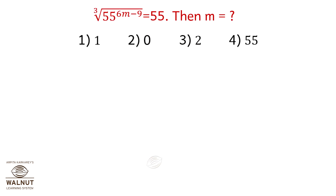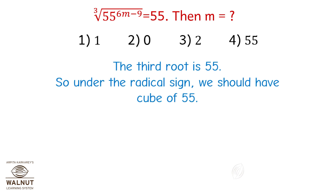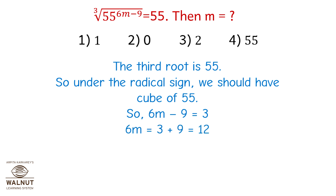Cube root of 55 raised to 6m minus 9 equals 55; find m. Since the third root is 55, under the radical sign we should have the cube of 55. So 6m minus 9 equals 3. Therefore, 6m equals 3 plus 9 equals 12. So m equals 2.